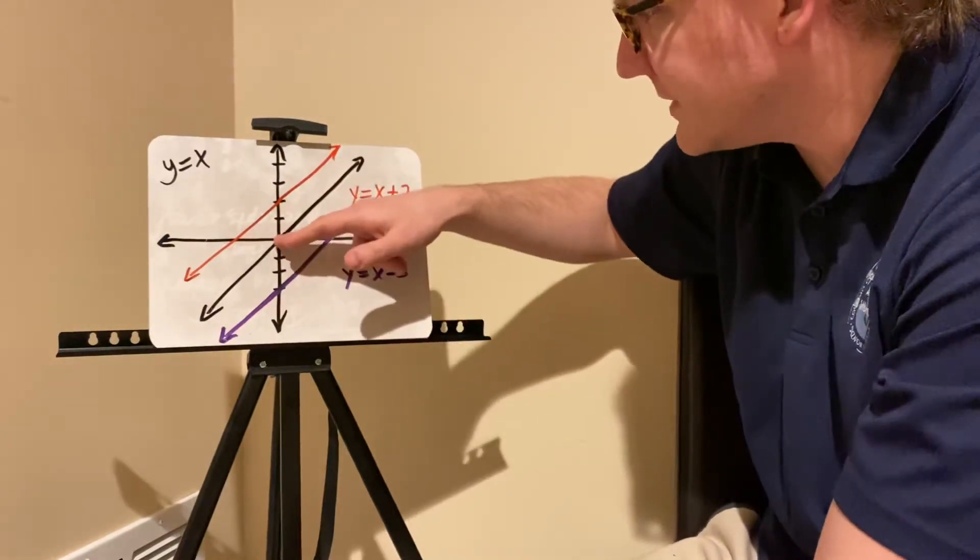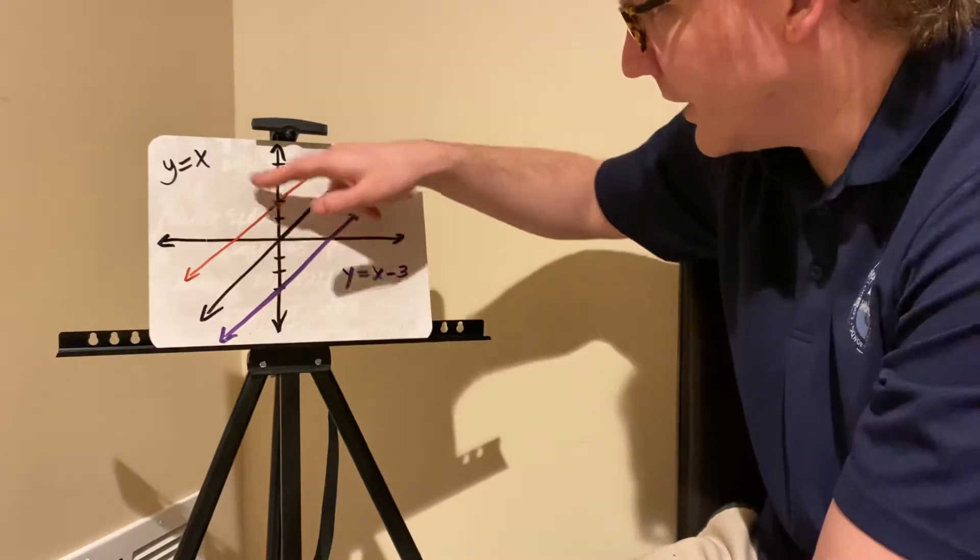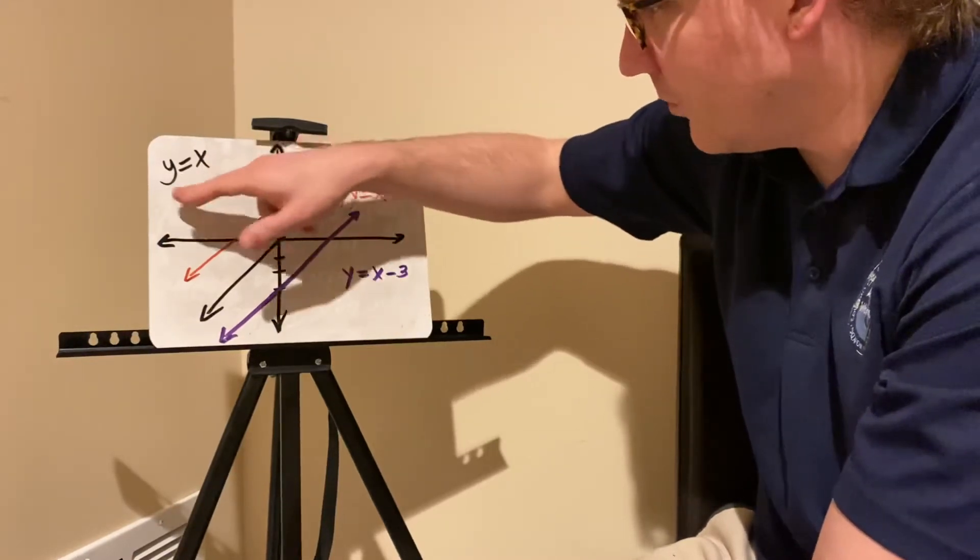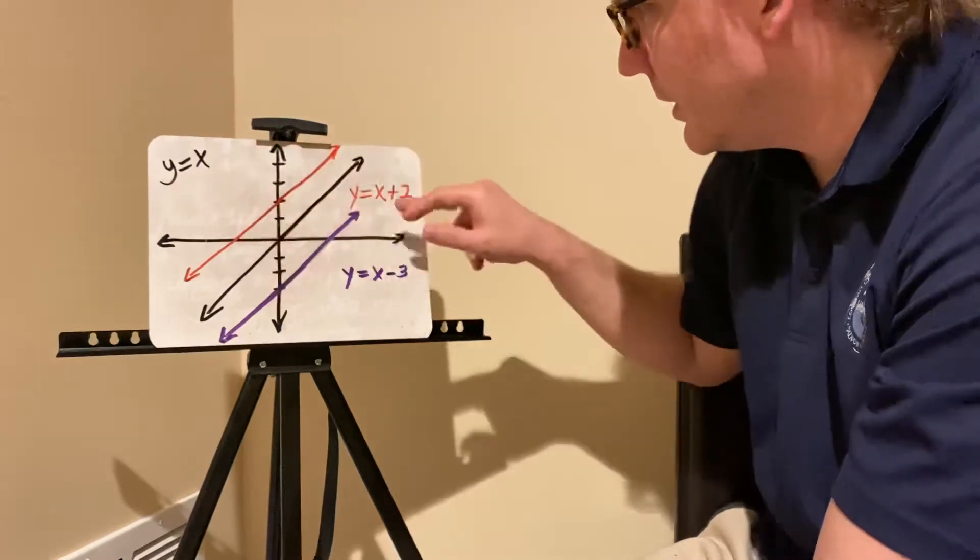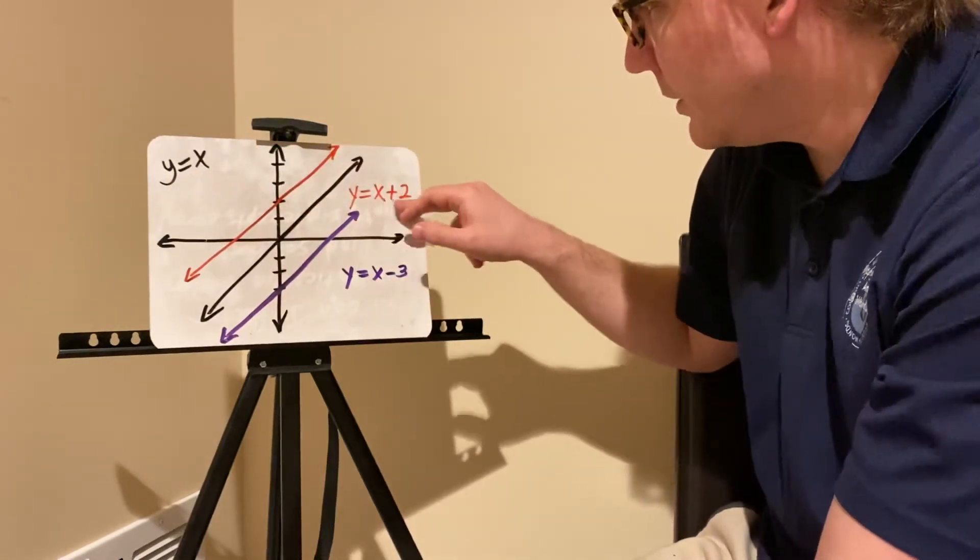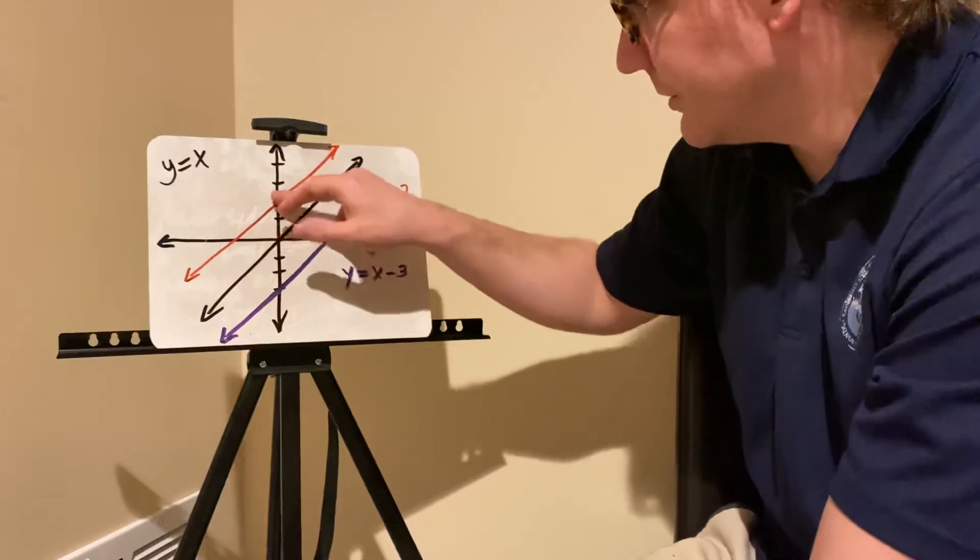The y-intercept isn't 0. It's 0, 2. So when x is 0, instead of y also equaling 0, when x is 0, you add 2, and so y is equal to 2. So it's 0, 2.